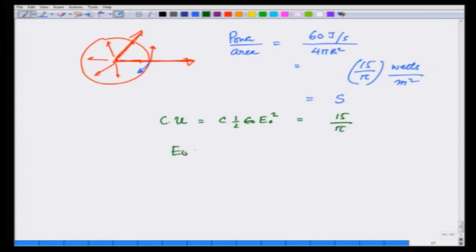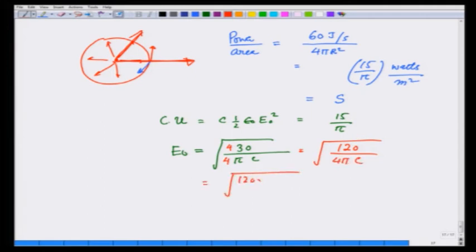E0 therefore is going to be equal to 30 over pi C square root. Let us multiply by 4. So, this is square root of 120 over 4 pi C which is equal to square root of 120 times 9 times 10 raise to 9 divided by 3 times 10 raise to 8. This gives me 10, this gives me 3. So, this is 3600 which gives me 60 volts per meter.